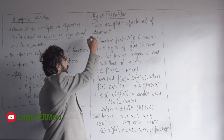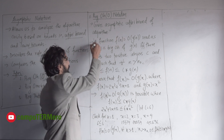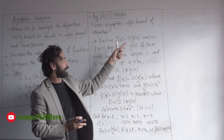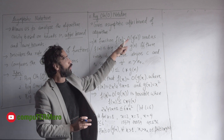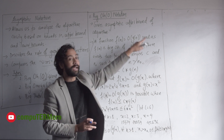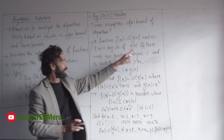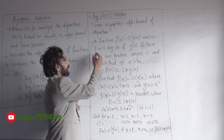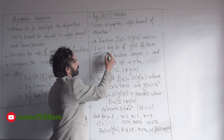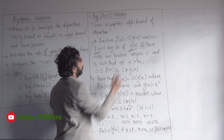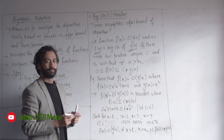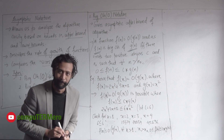This is an example of a function. The function f(n) is equal to Big O of g(n), read as f(n) is equal to Big O of g(n).